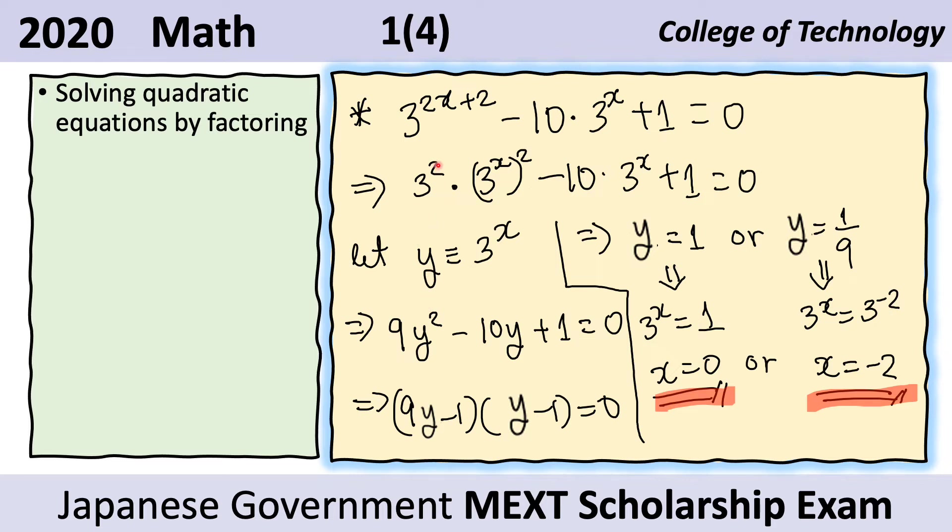If we rewrite this equation, we get 3 squared, which is 9, 3 to the x squared, which is just y squared. And here we have 10y, and 1 equals 0. Now this is just a quadratic equation.